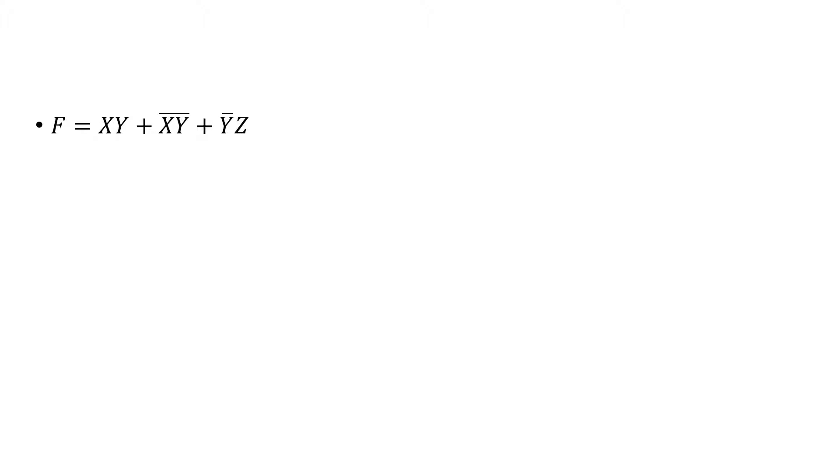Here we are, another example. Let's say we have this function and the first thing that we see is that we have to get it from letters, draw the gates, and draw the table. Basically the same process, just in a different order.